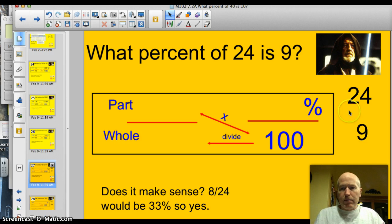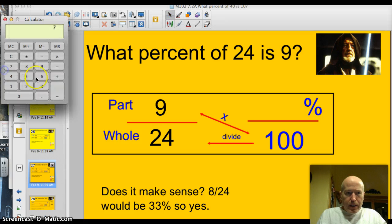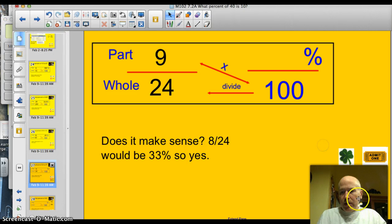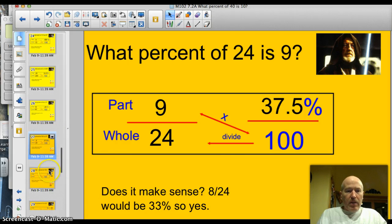Alright. I'm back. I'm dying to see how you did. Well, the part is 9. This is what percent of 24. So 24 is the whole number. So, I would have 9 times 100 is 900. 900 divided by 24 would give me... Did you say 37.5%? If you did, you nailed it. 37.5%. Very good.